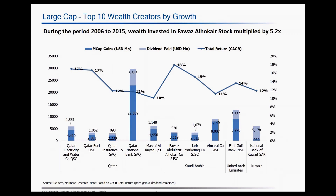Here we have identified the top wealth creators in terms of absolute growth or total return generated by the stocks. The Saudi-based Fayaz Abdulaziz Alhoqair company leads the list. It has generated close to about 18% CAGR return for its investors, and wealth invested in Fayaz Alhoqair stock has multiplied close to about 5.2 times during the 2006 to 2015 period. Most of the companies in this wealth creators list in the large cap are from Qatar — close to about 5 companies — with the rest from Saudi Arabia, UAE, and Kuwait. There are no companies from Oman or Bahrain in this segment.